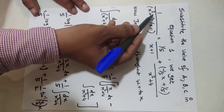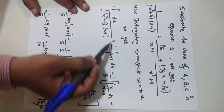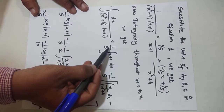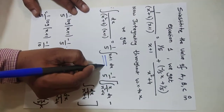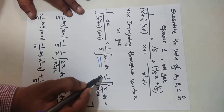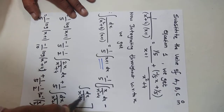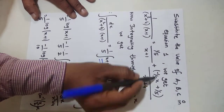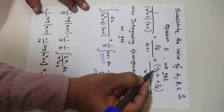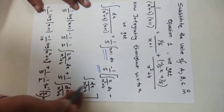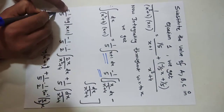Now apply the integration method. The integral splits into: a constant times the integral of 1/(x + 1), minus 1/5 times x/(x² + 4), minus a term involving 1/(x² + 4). Factoring out 1/5 common, we get x/(x² + 4) as the first term and 1/5 as the second term.